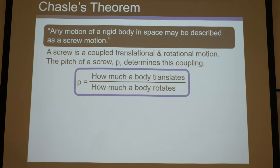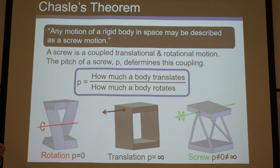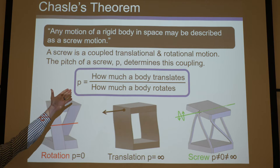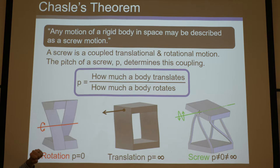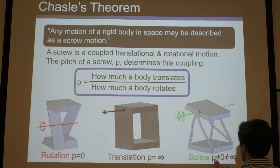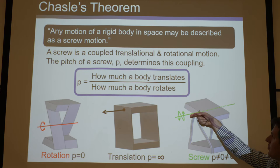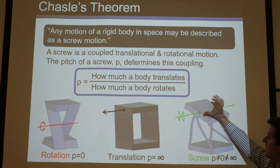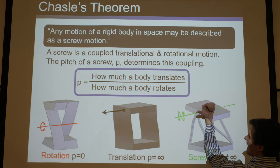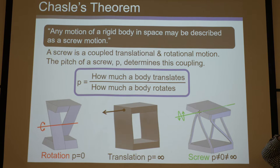This brings up the review of Chasles' theorem, which says any motion of a rigid body in space may be described as a screw motion. The pitch is how much the body translates over how much it rotates. When the pitch is zero it's a pure rotation; when it's infinity it's a pure translation. Here is an example where the pitch is some finite value — either negative or positive — and it translates in a coupled way.